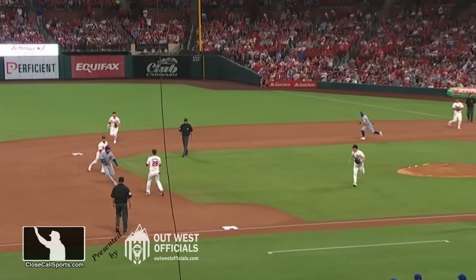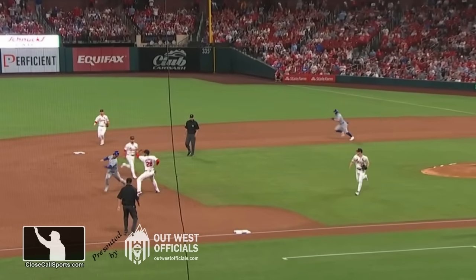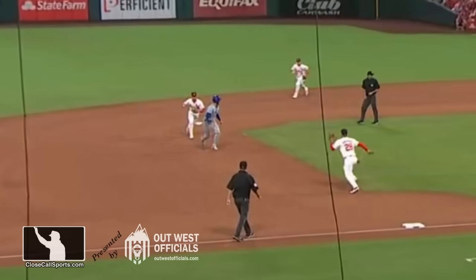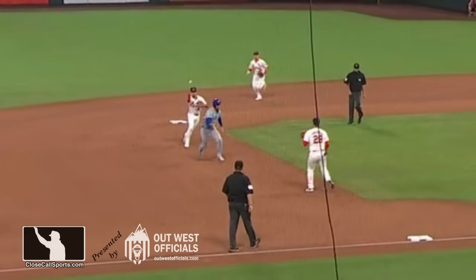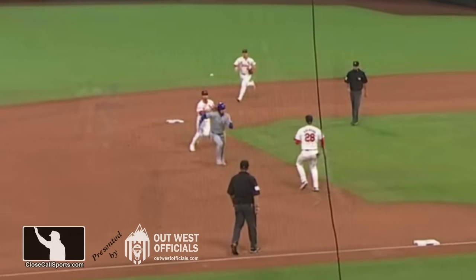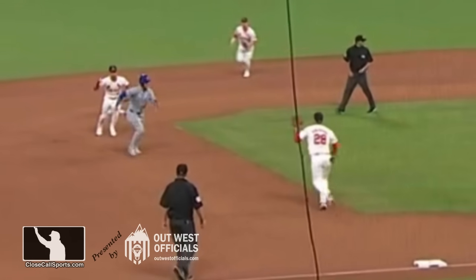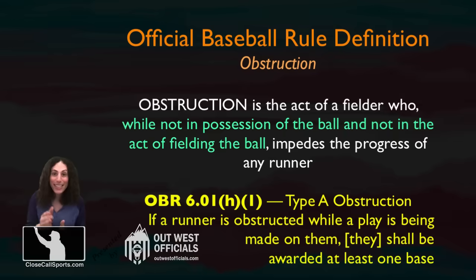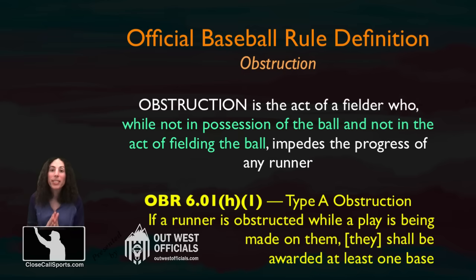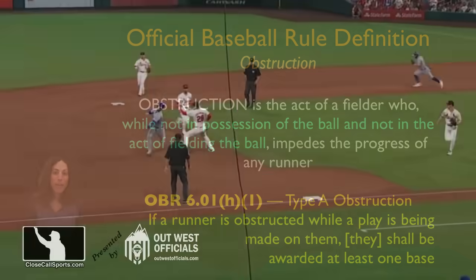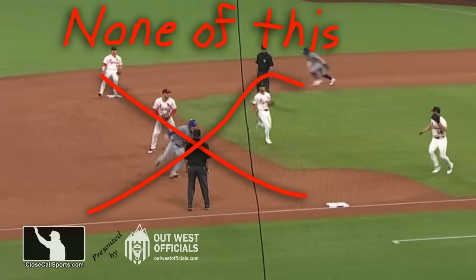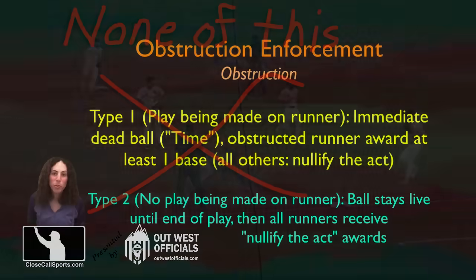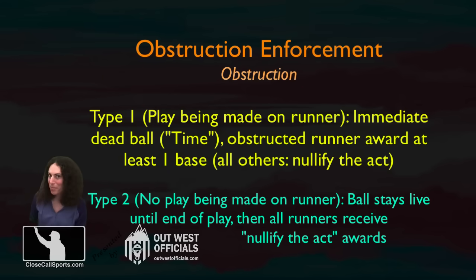Arenado cut the length, but that's the point that tips the scales for obstruction for me. Arenado is running at the runner without the ball and without even being in the act of fielding the ball, because the fielder hadn't released it yet. That is why I have obstruction here. And if you call the obstruction, you don't even have to consider the base path issue, because it would already be dead at the moment of obstruction.